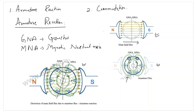We should also note that in case of a DC generator the magnetic neutral axis will get shifted in the direction of rotation of the armature, while in case of a motor the magnetic neutral axis will get shifted in the direction opposite to that of the rotation.